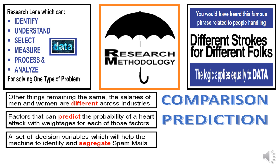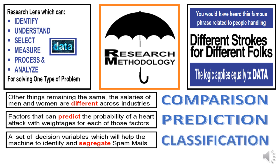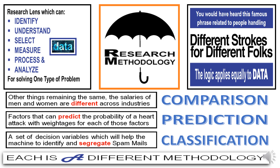Look at the third one: a set of decision variables which can help a machine to identify and segregate the so-called spam mails. Good mail versus spam mail as segregated by the computer is a classic classification problem. So comparison, prediction, and classification, etc., are very different types of problems. Each of them is a different type of methodology.